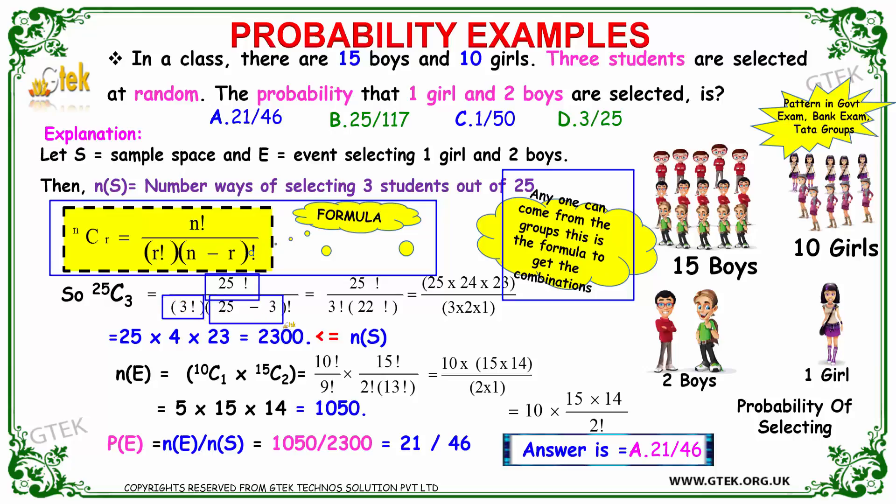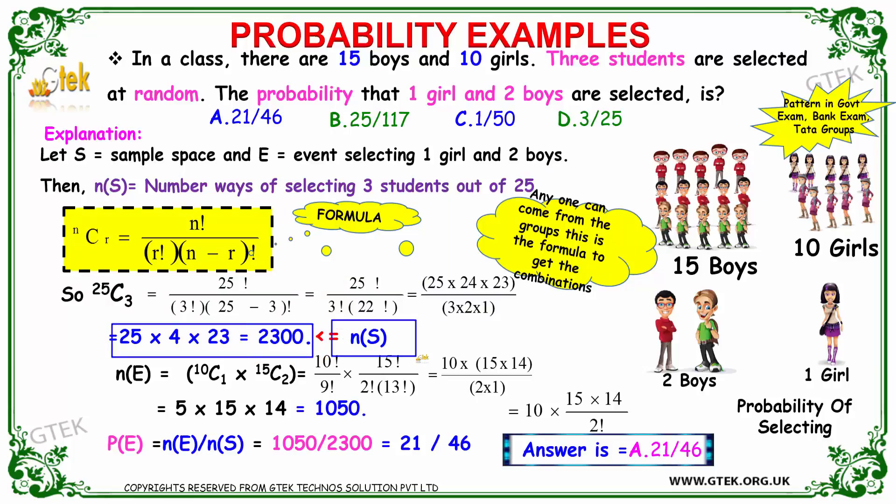3 factorial into 25 minus 3 factorial, so it's 25 factorial into 23 factorial, so 22 into 3 factorial. We got 25, 24, 23, and 3 into 2 into 1. Solving this one, you got the number of events.